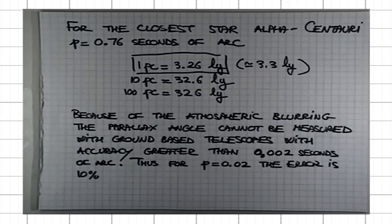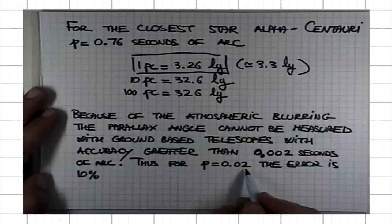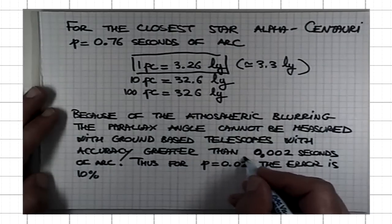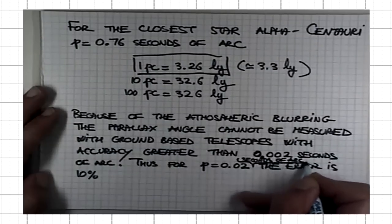This accuracy is pushing it. What does this mean? What distance corresponds to a parallax angle of 0.02 seconds of arc? Physical quantities should always have units.